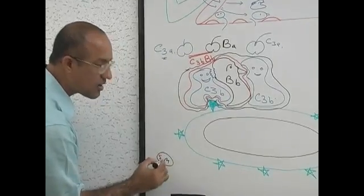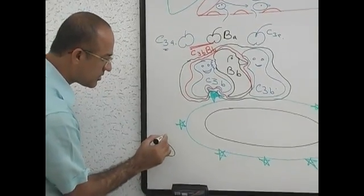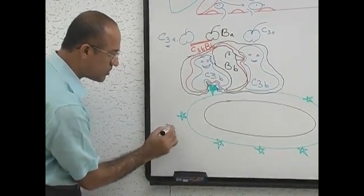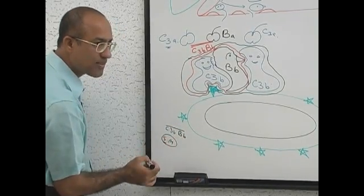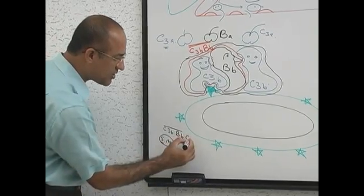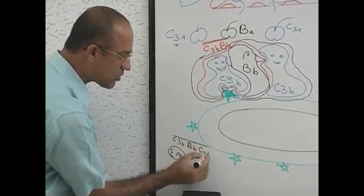Surface molecule, what bound? C3B, then B. B both of them together? C3 convertase then another C3B and now together called C5 convertase.